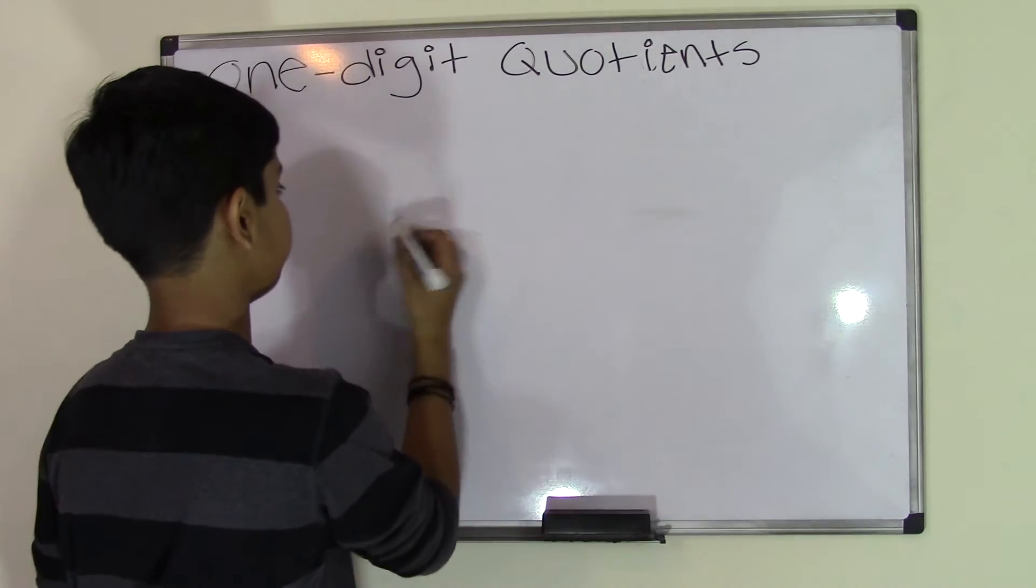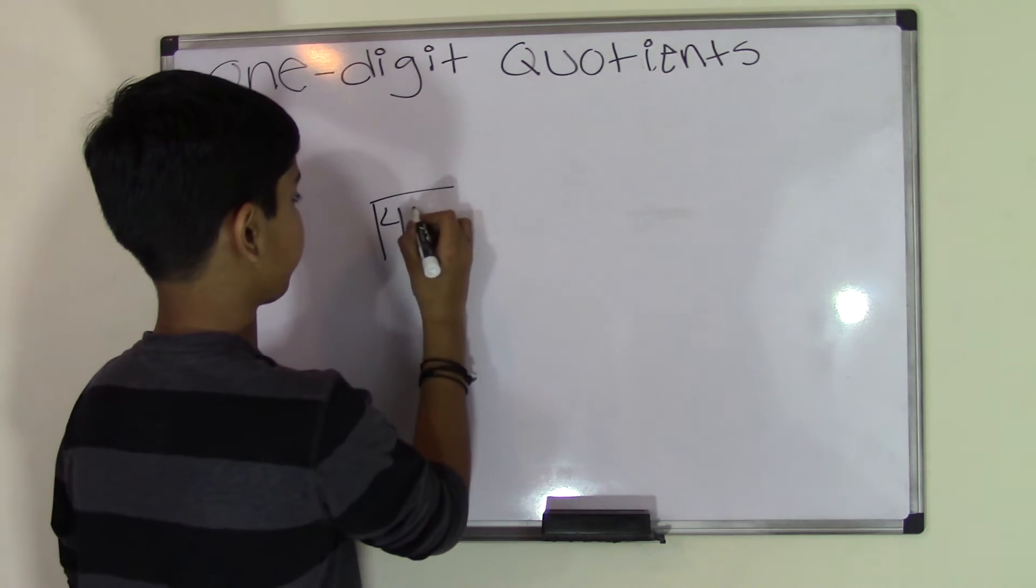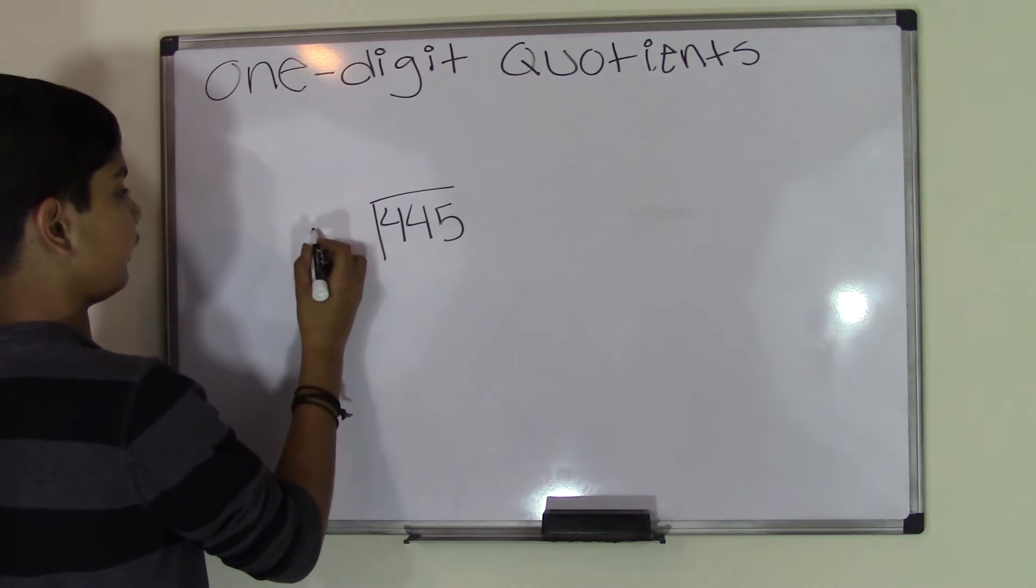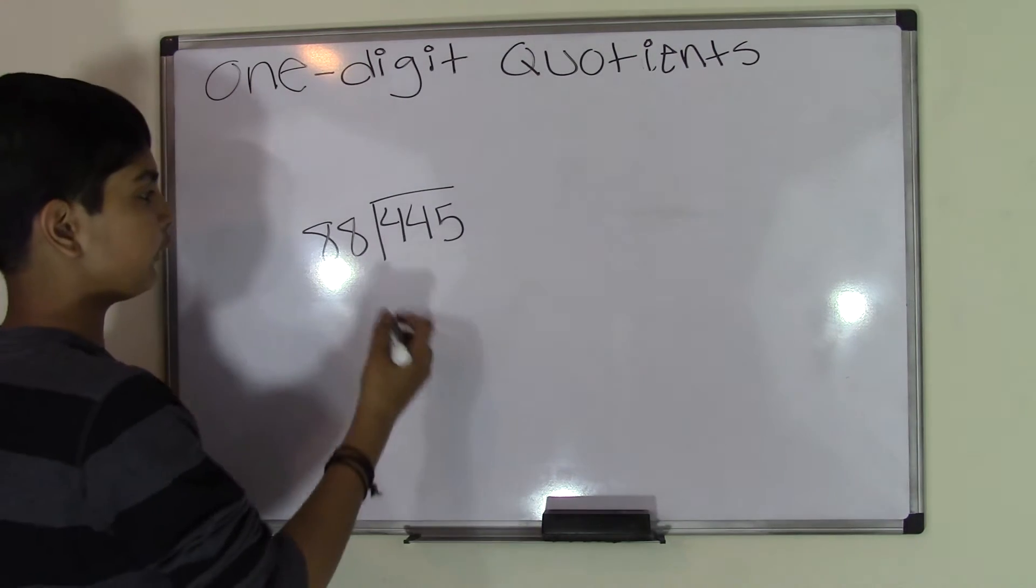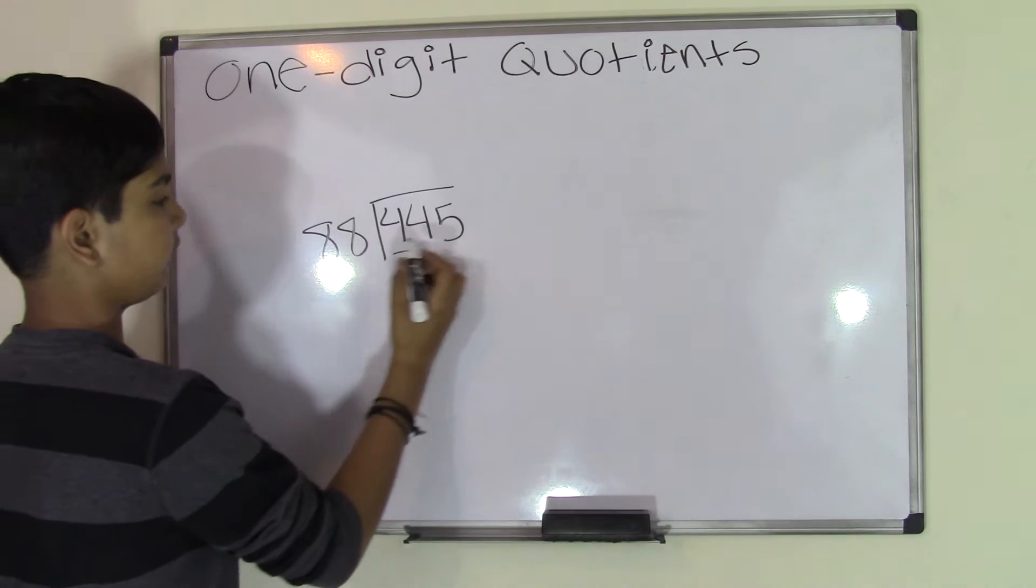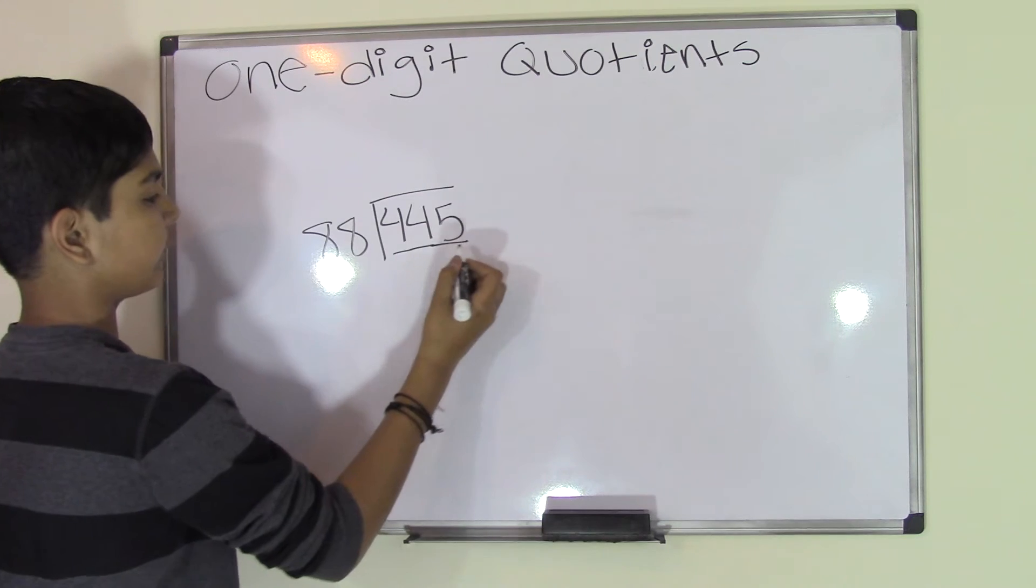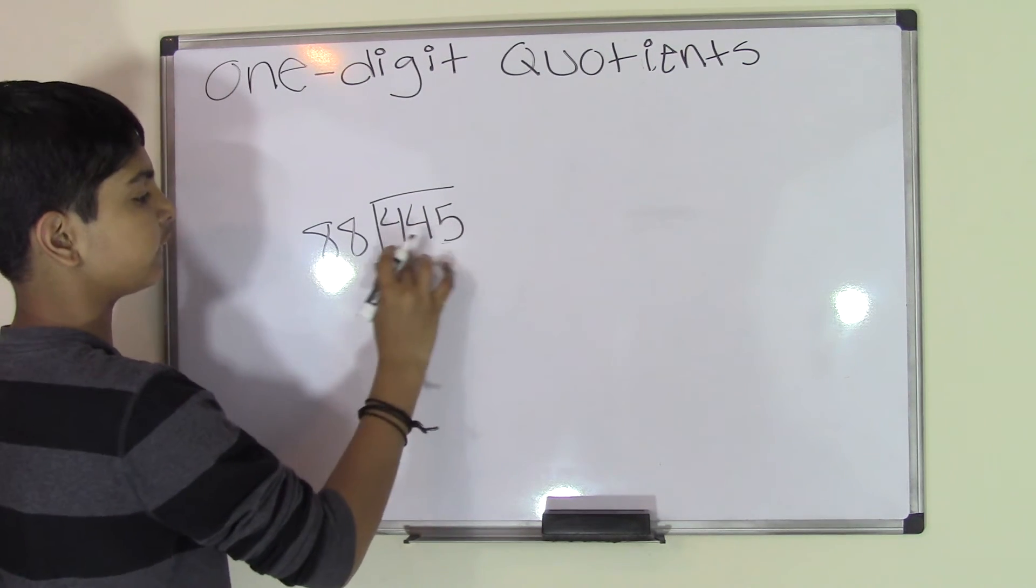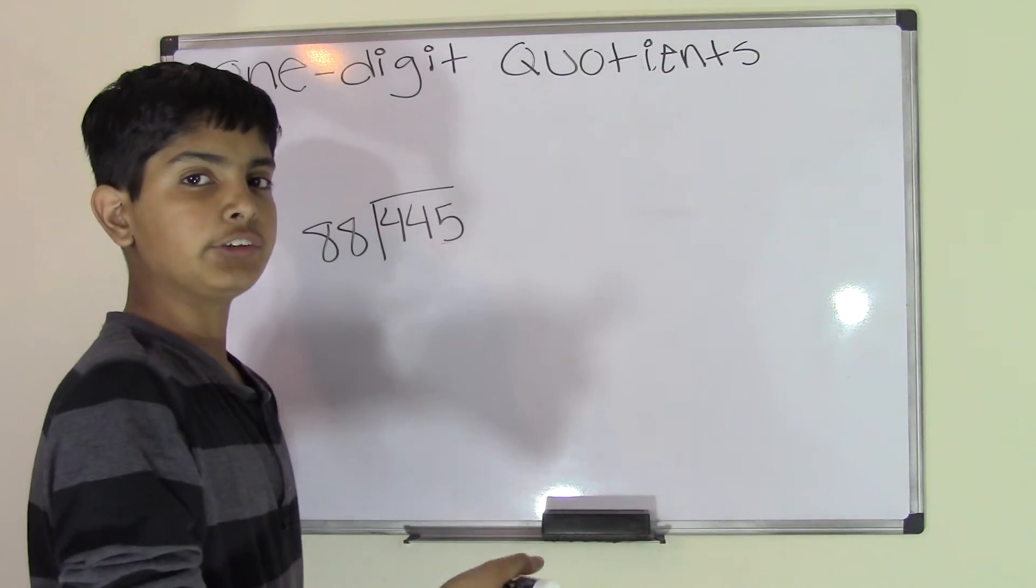For example, we have 445 and we have 88. Now remember, first we look if 4 can go into 88. No, it can't. Can 44 go into 88? No, it's still smaller. Can 445 go into 88? Yes, it can, because it's greater than 88.